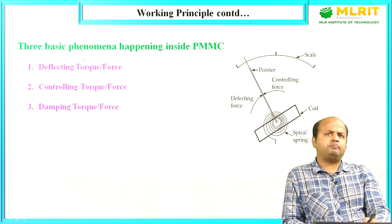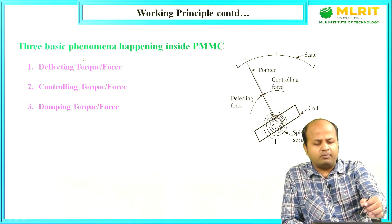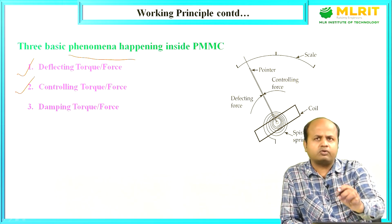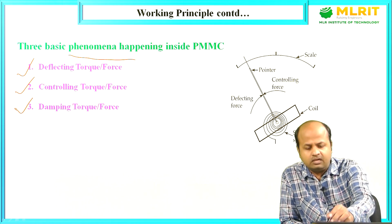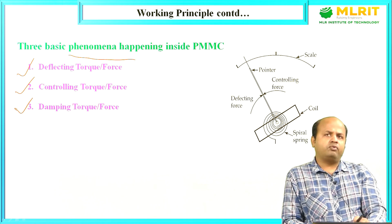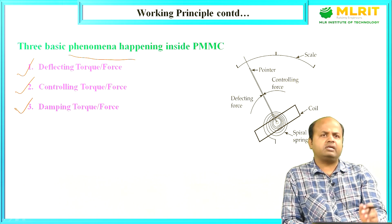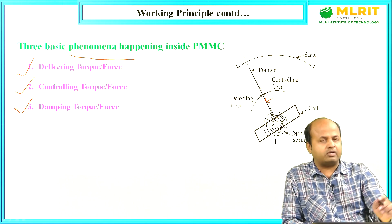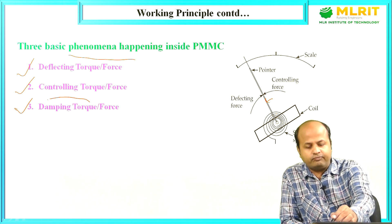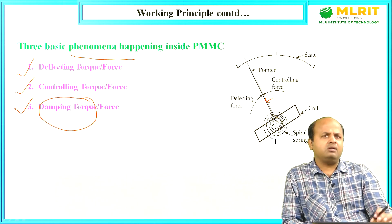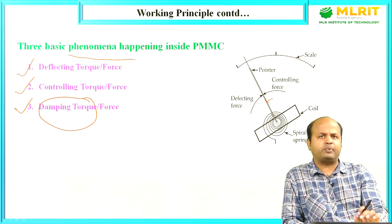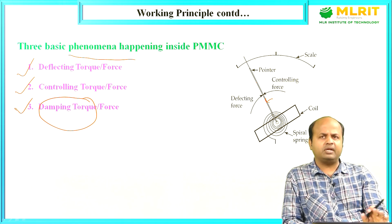Inside a PMMC, three types of phenomena occur. First is deflecting torque or force. Second is controlling torque. Third is damping torque or force. Deflecting torque deflects the pointer, controlling torque controls the movement of the pointer, and damping torque damps the movement of the pointer. We will see the details of each in the following slides.